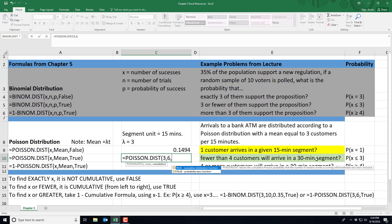We'll do comma because I'm looking for the cumulative probability between 0 and 3 customers. I type in true, close my parentheses, and hit enter. So the probability of fewer than 4 customers arriving in a 30 minute segment is 0.1512.